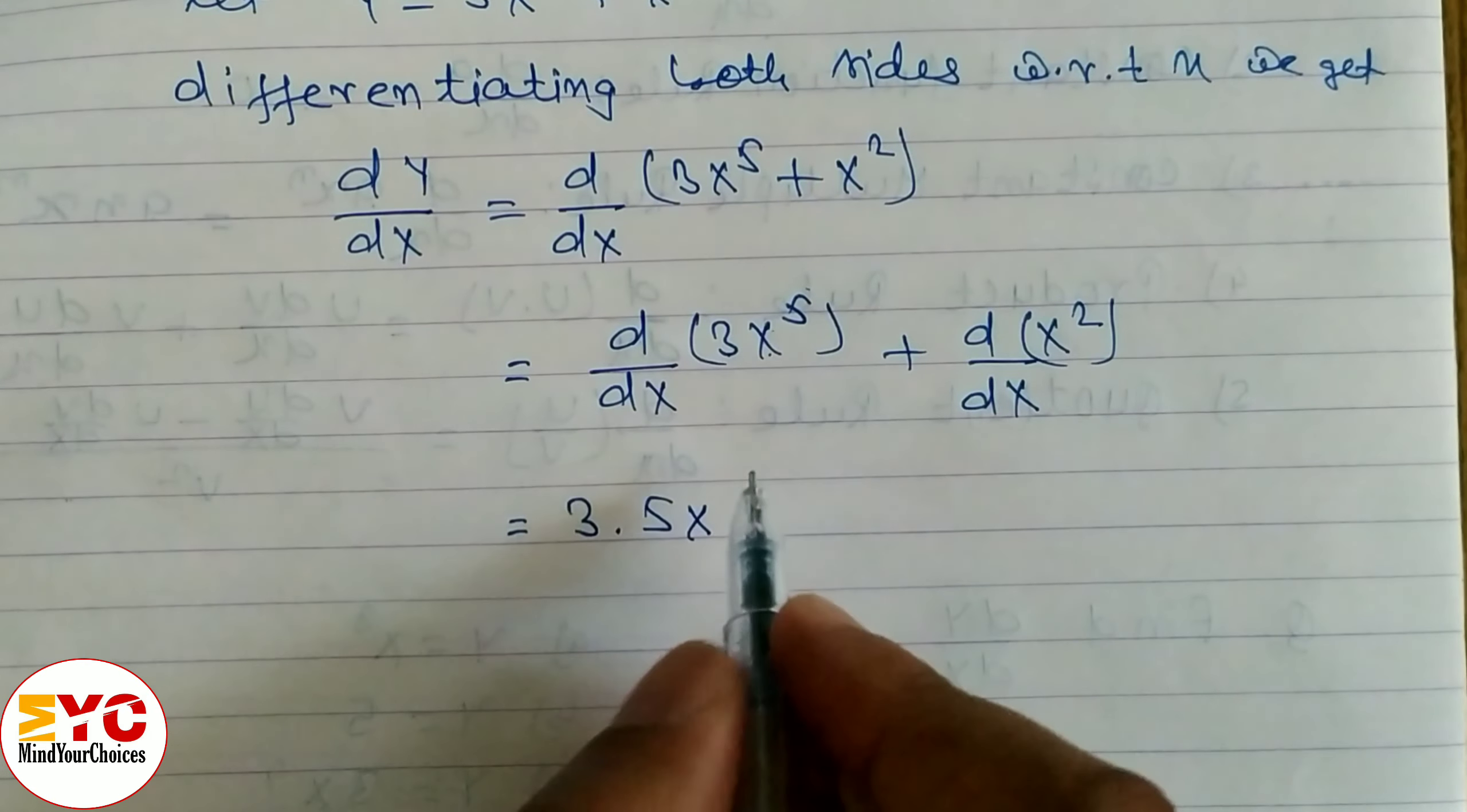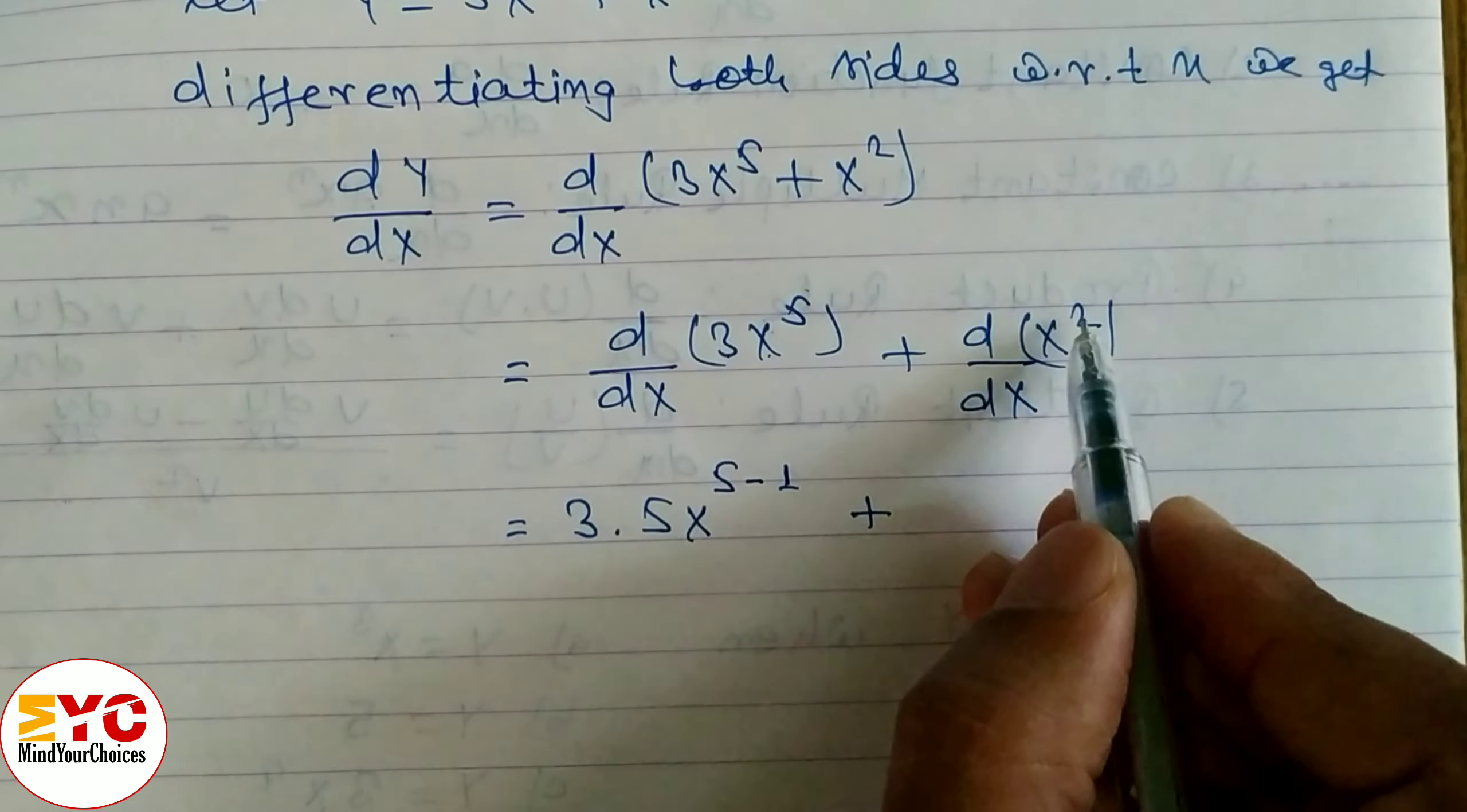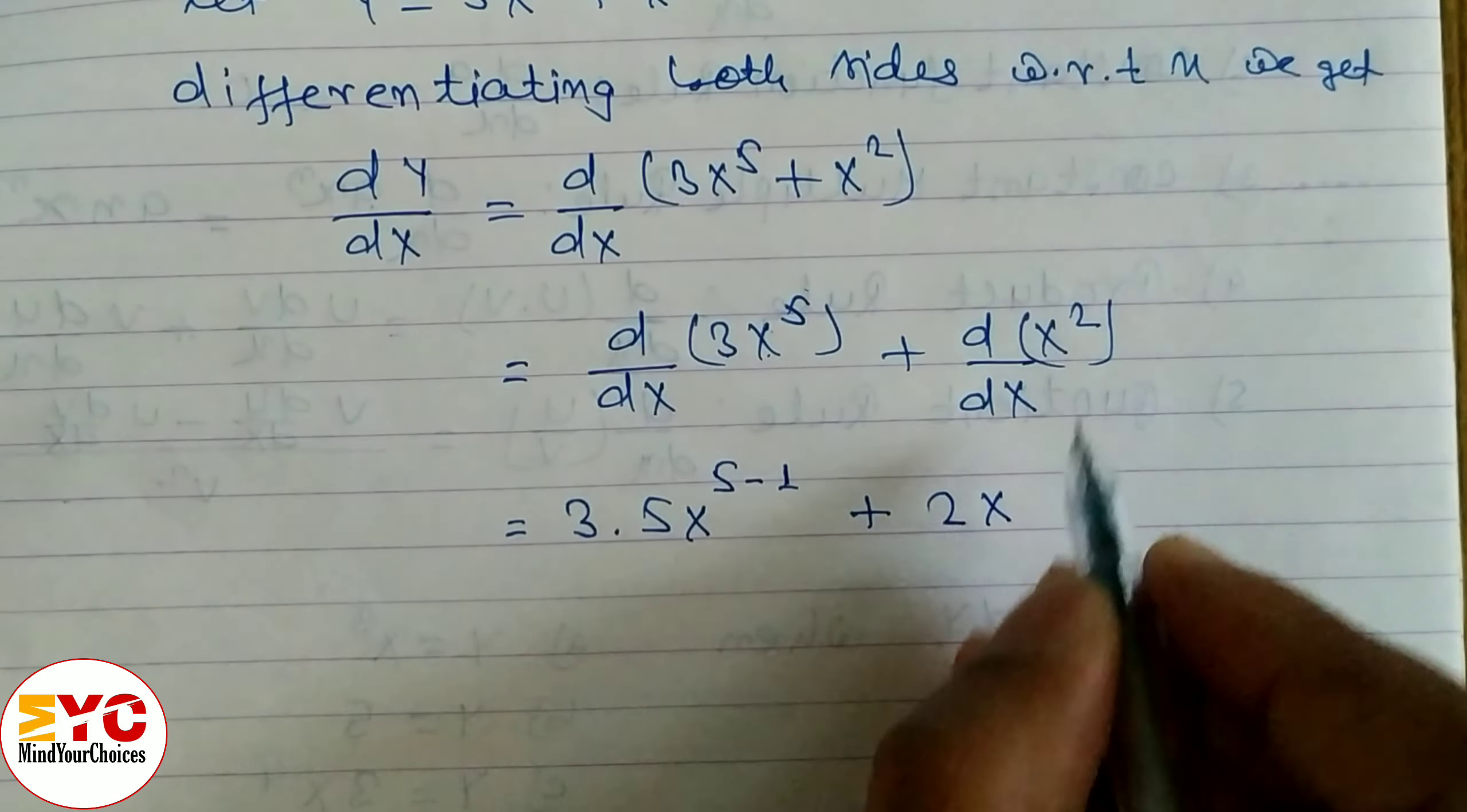power from 5 we have to subtract 1 so we can write 5 minus 1. Plus here you can see here we have to use power rule so power here is 2 so we have to write here 2x power